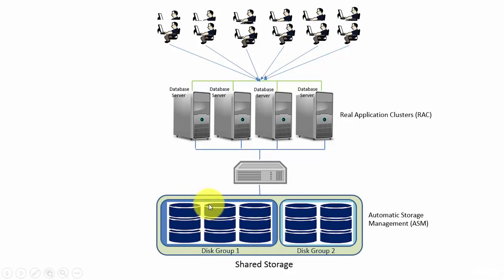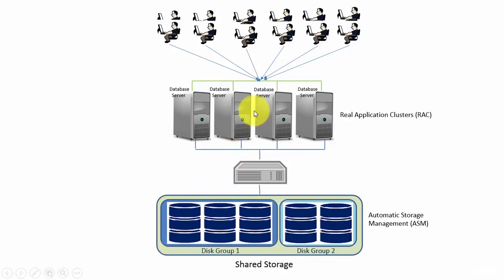Think about it — if all the data is stored in one disk, then the processor has to read from that single disk and performance will go down. Instead, if the data is replicated among all the disks, the database servers can read from multiple disk groups rather than competing for one disk. Another advantage of Automatic Storage Management is that we can mirror the files — meaning we can maintain multiple copies of the same files, so even if we lose one copy, we have another copy for the database to run without any failure.